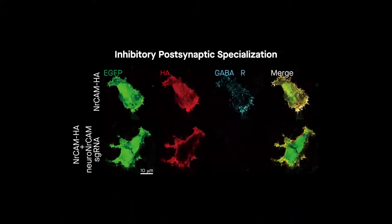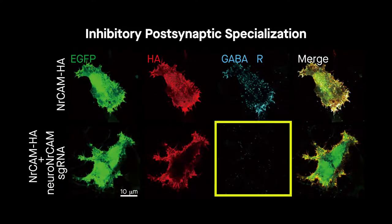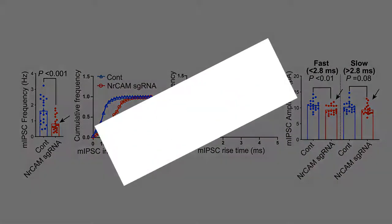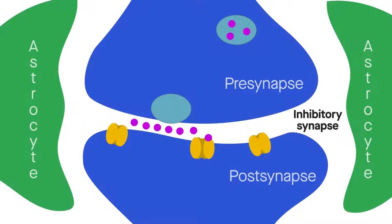In fact, depletion of NR-CAM was found to significantly reduce numbers of inhibitory synapses and their function. That's important, because astrocytes were previously believed to control the formation of inhibitory synapses through the secretion of proteins.